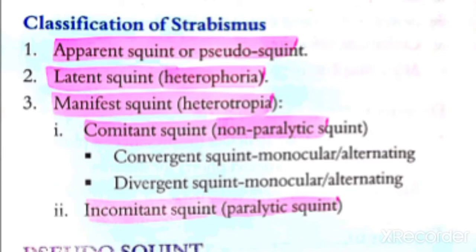Latent squint is hidden, which is the phoria type, and manifest squint is what we can observe visually. The term for latent squint is heterophoria, and the term for manifest squint is heterotropia. Manifest squint has two types: concomitant and incomitant. Concomitant is non-paralytic squint, and incomitant is paralytic squint — meaning there is muscle paralysis involved.